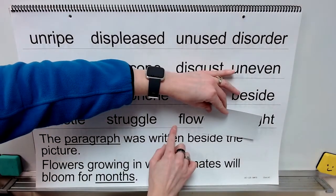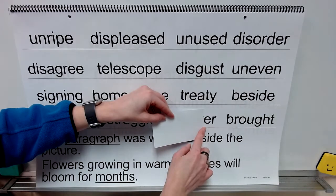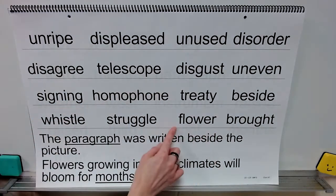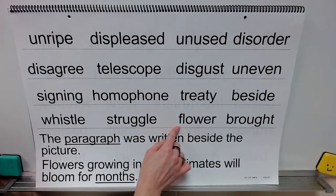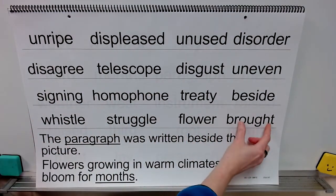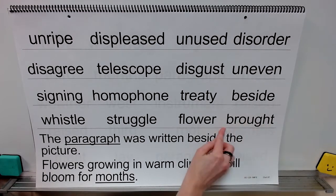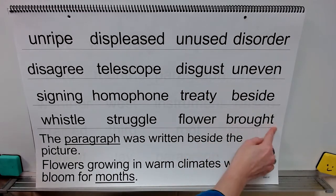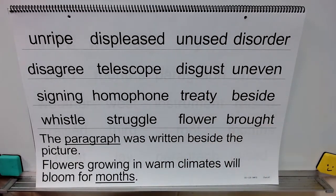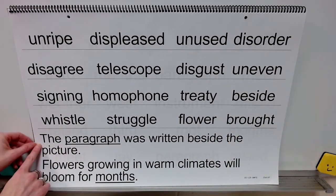Syllable: flow, syllable: ur, word: flower. Sound: aw, word: brought. Now let's read some sentences.